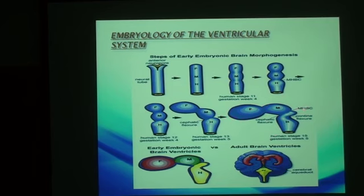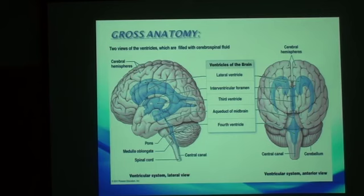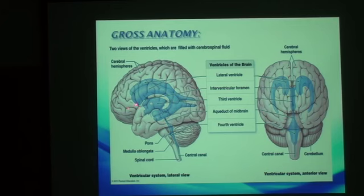Broadly, the ventricular system is formed by two lateral ventricles, the midline third and fourth ventricles. The two lateral ventricles are connected to the third via the foramina of Monro, whilst the third ventricle is connected to the fourth via the cerebral aqueduct of Sylvius.